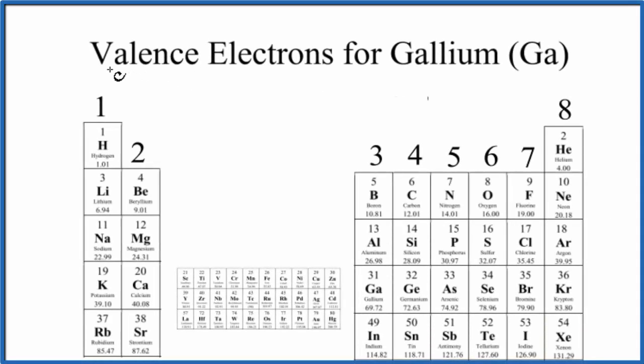There are two main ways to find the number of valence electrons for gallium, that's Ga. The first is to look at the periodic table and know the pattern for valence electrons.